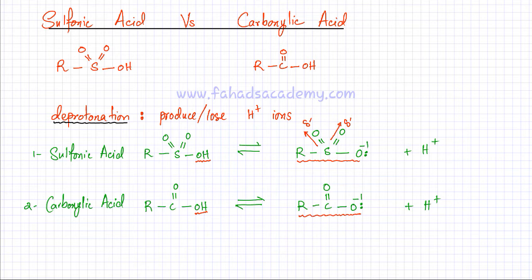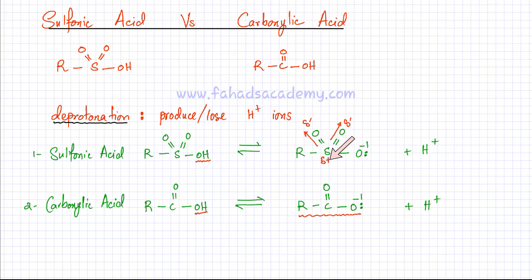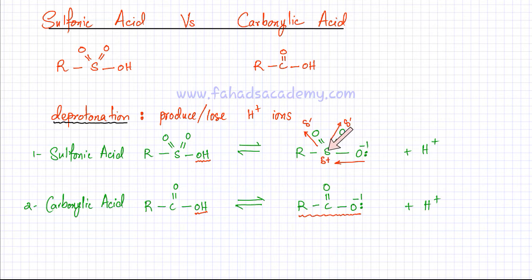The sulfur ends up with a slight positive charge, which then attracts the negative charge built up on the oxygen atoms. So because of these two oxygen atoms pulling electrons, the electrons which were concentrated on the anion oxygen get spread out over the entire molecule. This means the charge density on the anion oxygen decreases.